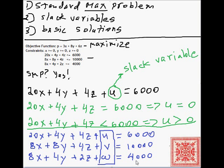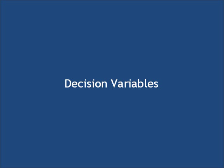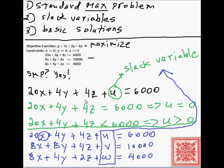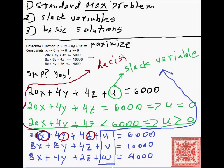For completeness, let's define decision variables to make sure we have all definitions in place before the next screencast. Decision variables are the variables explicitly used in the objective function. In the next screencast we'll develop the notion of basic solutions and then develop and implement the simplex method.